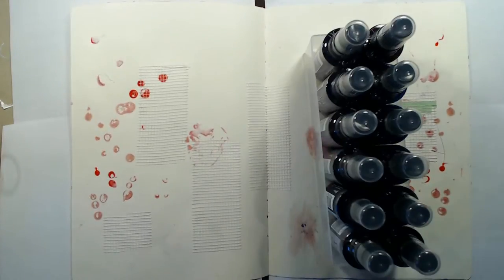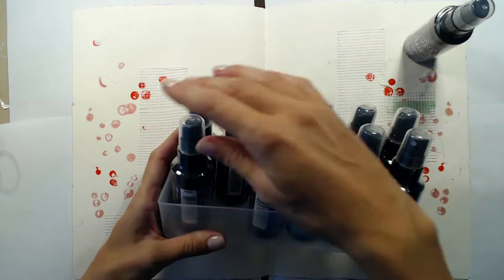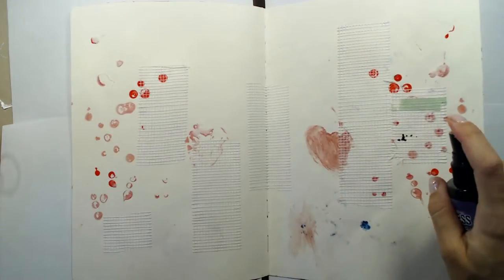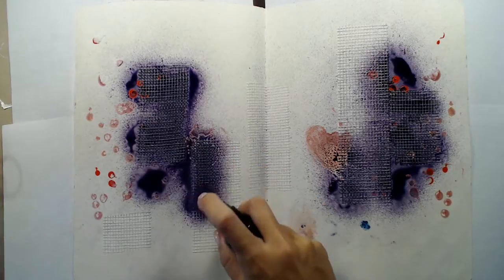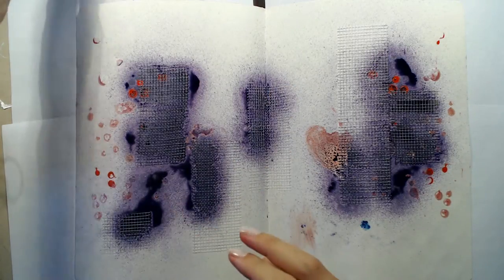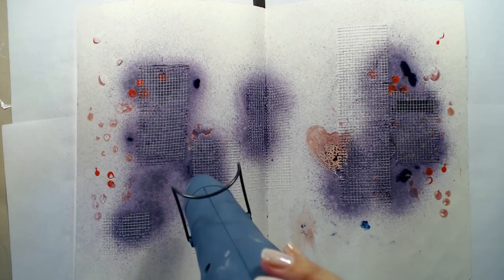When I'm happy with the amount of tape used, I am bringing up my distress sprays and I have chosen to work with the blue and purple colors here. First I'm spraying the page with the dark purple, and I think it might be Seedless Preserves, but I will check and add a link in the description bar below. I'm mostly focusing around where I have added the tape.